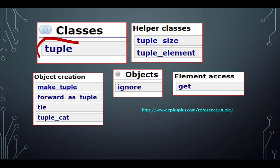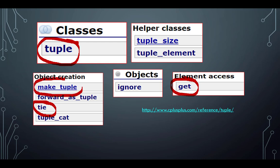We're going to look at the class name tuple, getting an item, the use of tie, make_tuple, and ignore. That's sufficient so you can work on the others independently.